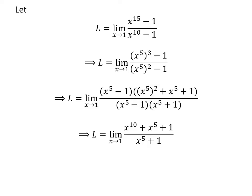Cancelling out the common factor x raised to the power of 5 minus 1 in the numerator and the denominator gives us L is the limit of x raised to the power of 10 plus x raised to the power of 5 plus 1 upon x raised to the power of 5 plus 1 as x approaches 1.